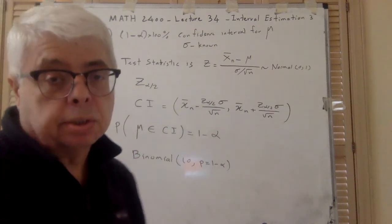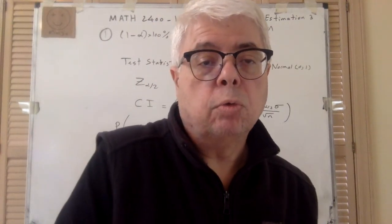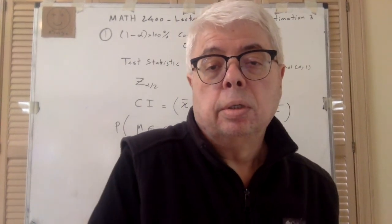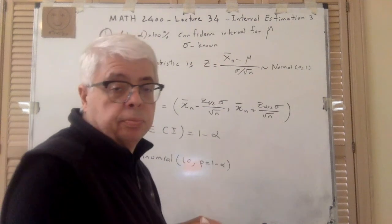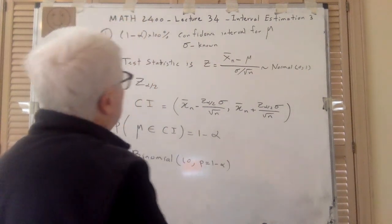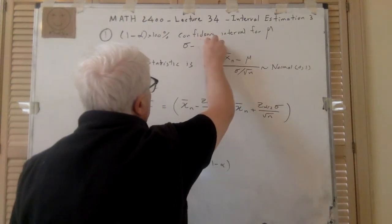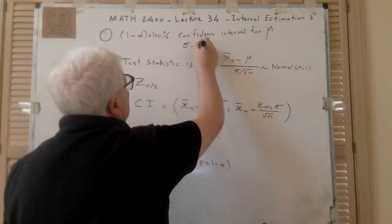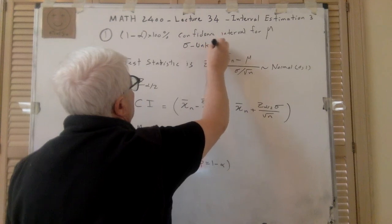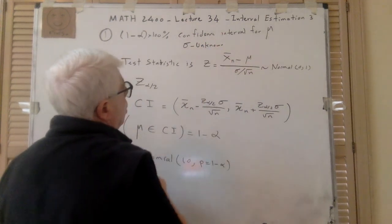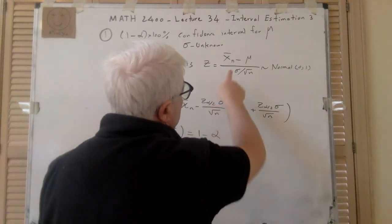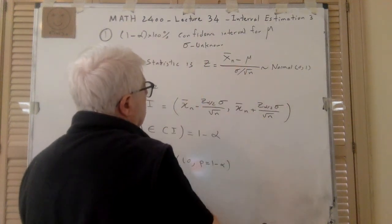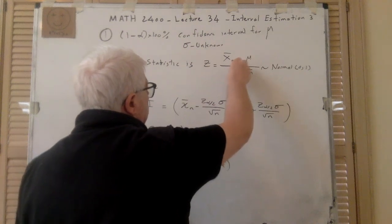Now the second one — I'm going to go one by one from the notes. When sigma is unknown, you have to use S instead of sigma — S_N.